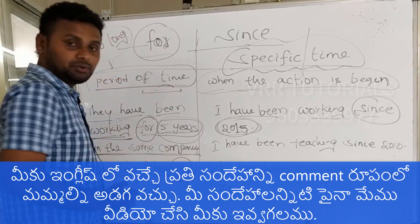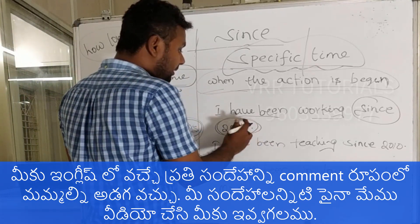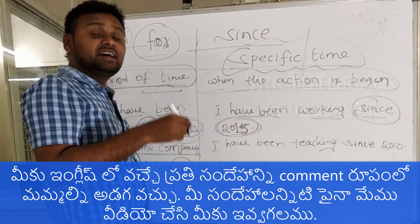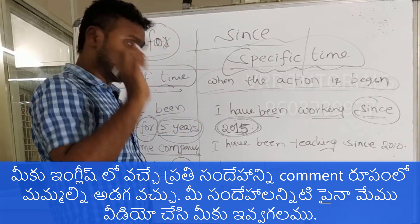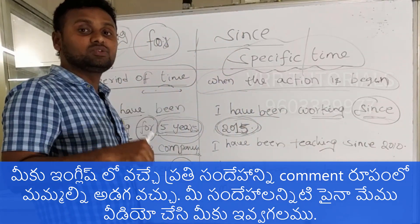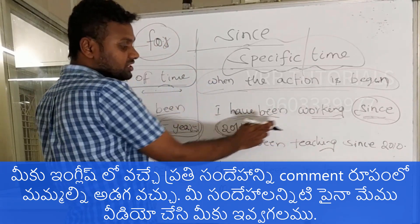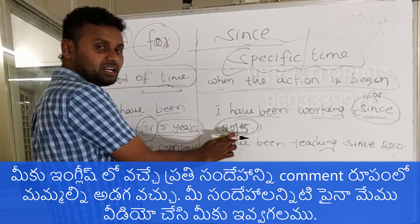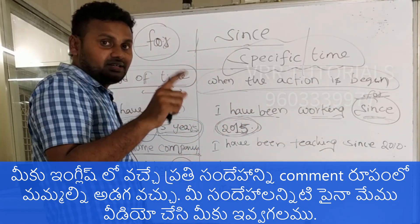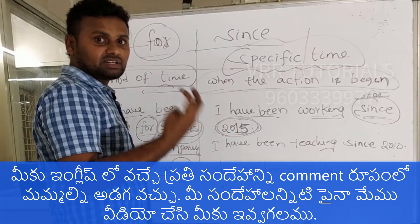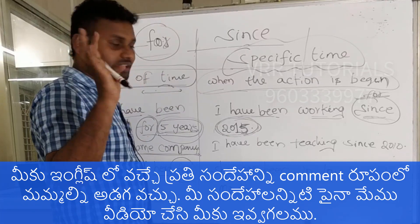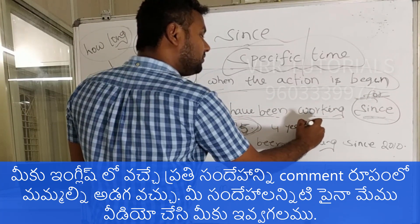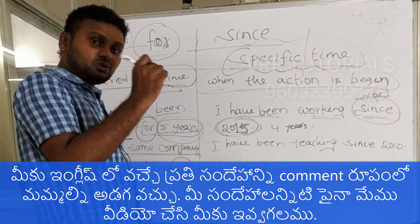I started in the year 2015, so use 'since': I have been working here since 2015. You don't say 'I have been working for 2015'. 'For' is used with quantities or periods like 'four years' — 2015, 16, 17, 18, 19 — that's four years, so you say 'I have been working for four years'.